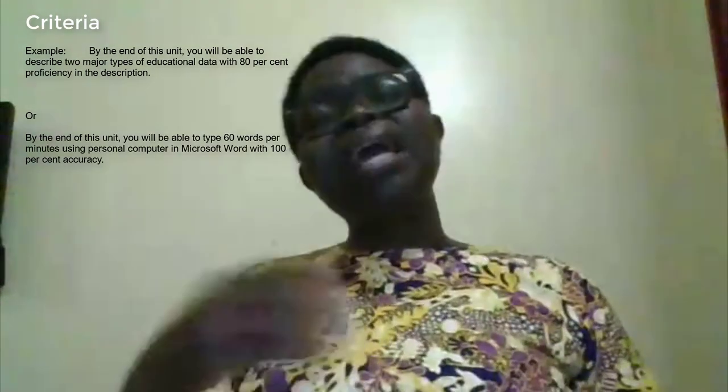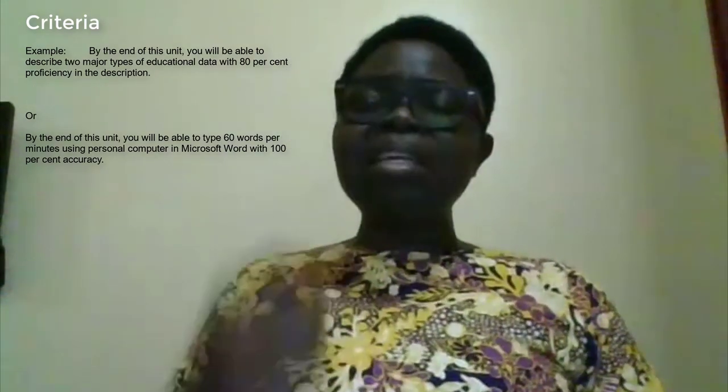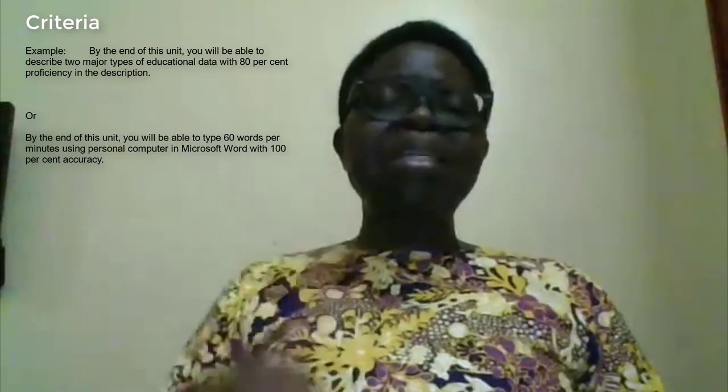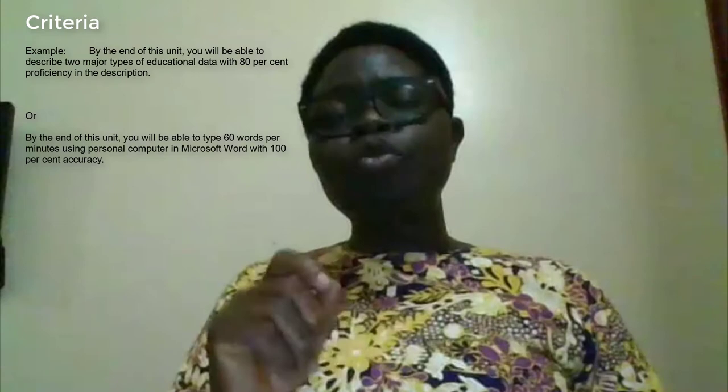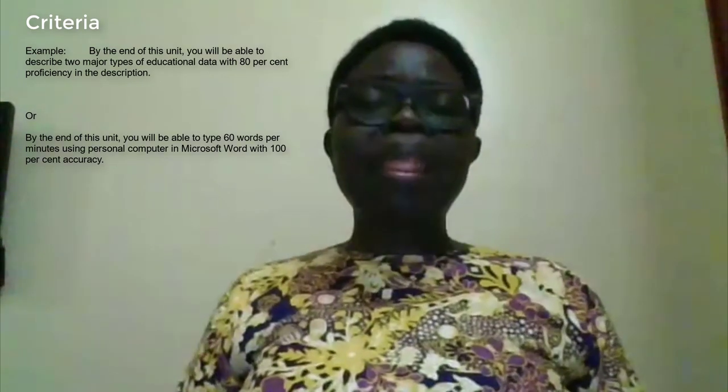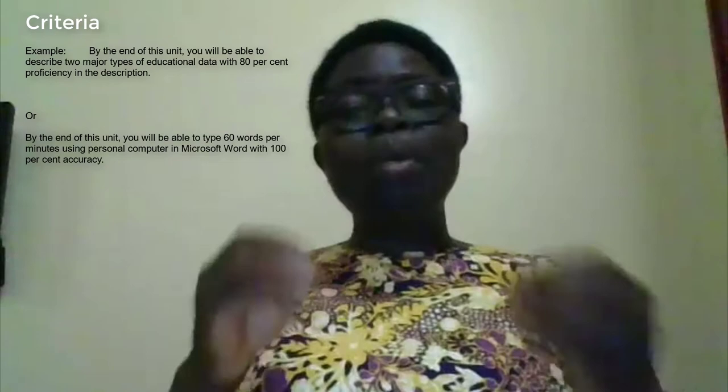Or you could say: 'By the end of this unit, you will be able to type 60 words per minute using a personal computer in Microsoft Word with 100% accuracy.' What you are expecting from students is that they type 60 words per minute without error. The condition specifies a personal computer and Microsoft Word — not a typewriter, not WordPad or any other application. The criteria for measurement is 100% accuracy, so if it is not 100%, the outcome is not met.